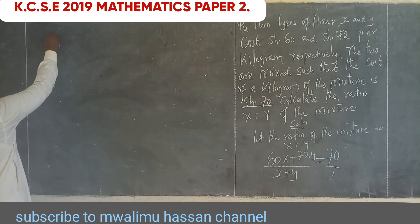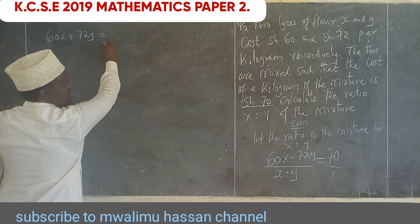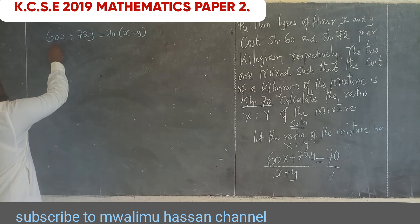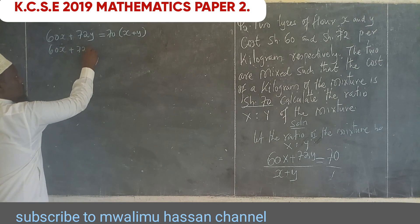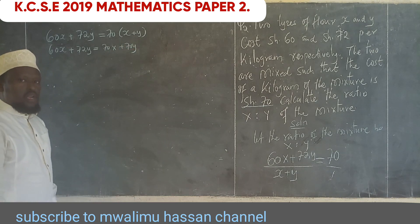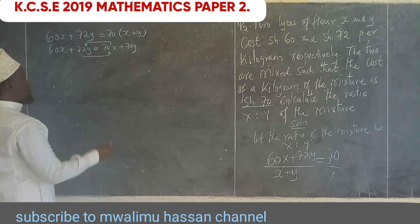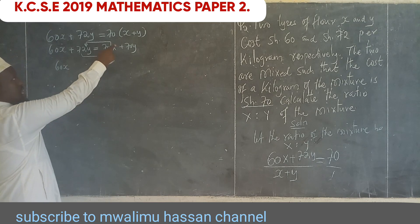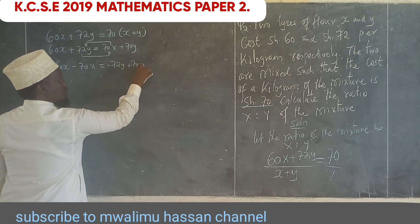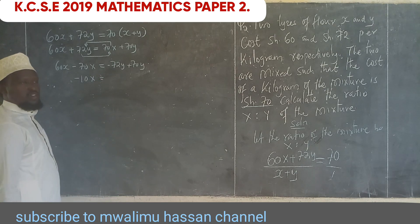So we have 60X + 72Y = 70(X + Y). Opening the bracket: 60X + 72Y = 70X + 70Y. Collecting like terms, taking the Y values to one side and X values to the other: 60X − 70X = 70Y − 72Y, giving −10X = −2Y.